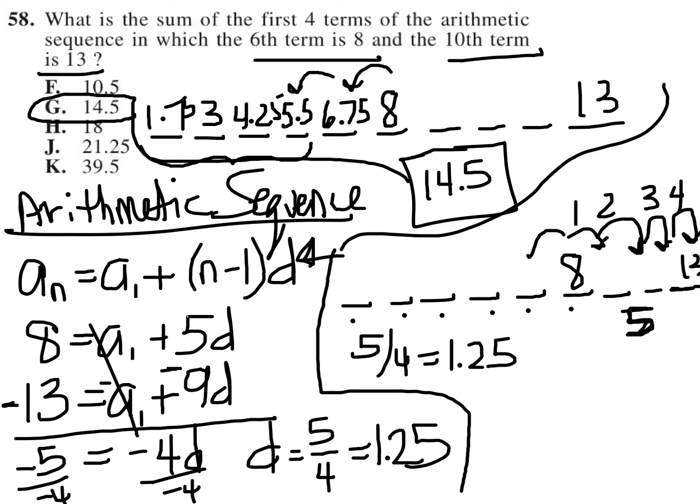And then just like before, I simply subtract the 1.25 as I work my way down from 8 to figure out what those first four units are in the sequence, and then add those together as I already did initially.